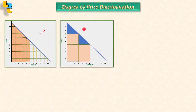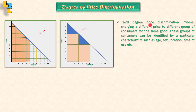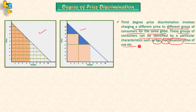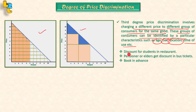Third degree price discrimination involves charging a different price to different groups of consumers for the same good. These groups of consumers can be identified by particular characteristics such as age, sex, location, or time of use. For example, we give students a discount at a restaurant — this is third degree price discrimination based on age. Similarly, if a person buys a ticket in advance, they may get a discounted price.